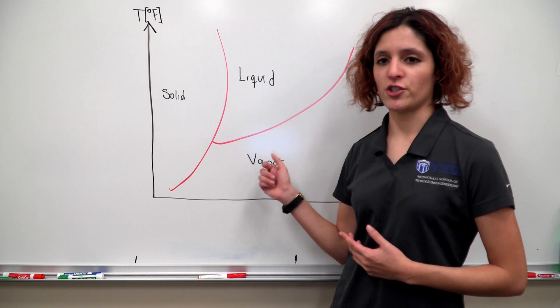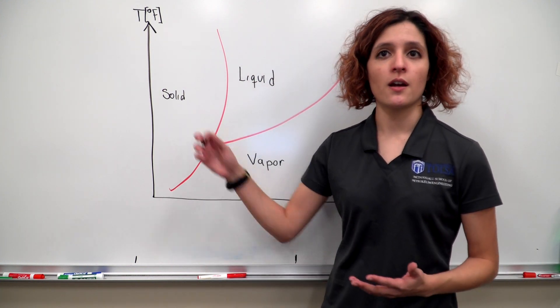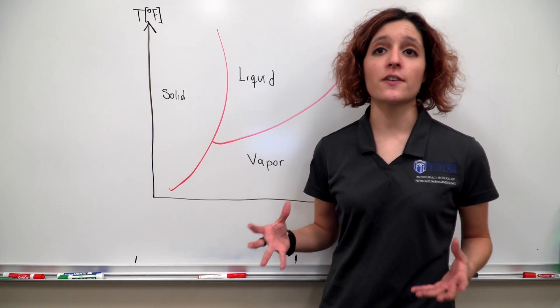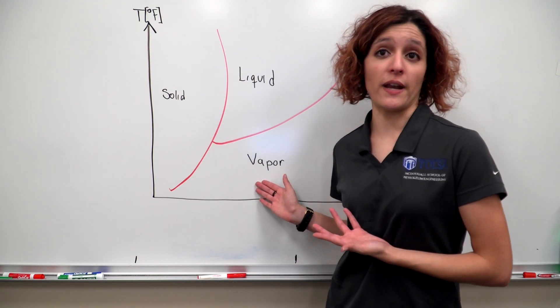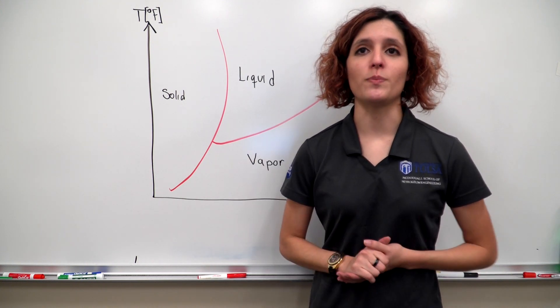Let's take water for example. At low temperatures we have a solid, ice, and at higher temperatures and lower pressures we would have a vapor, and at higher temperatures and higher pressures our phase would be liquid.